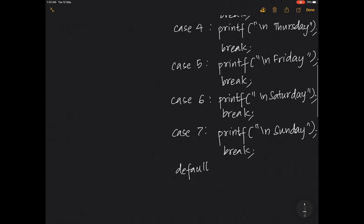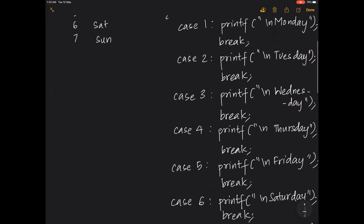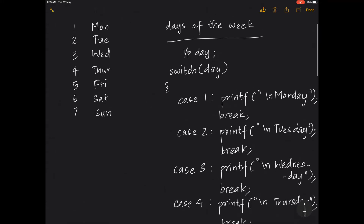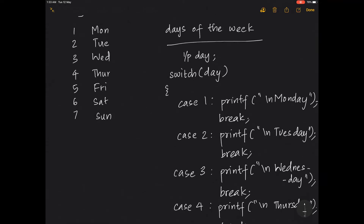Continuing through the cases up to Sunday, you can add a default case to print an invalid input message — this is purely optional. Then close the switch-case structure. This is how you equate each day number from 1 to 7 and print the respective day. You can also add a sentence like 'the day is' before the switch block, leaving a space so the day name gets appended.